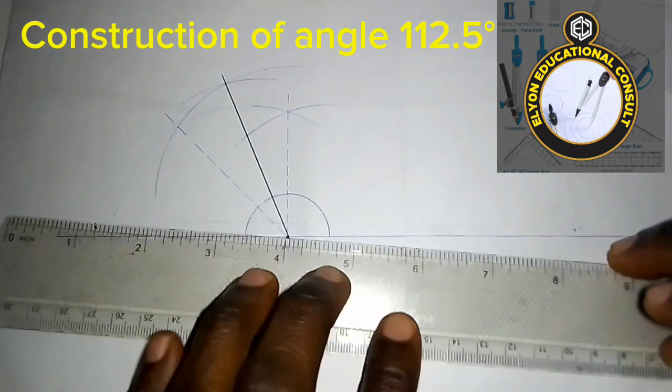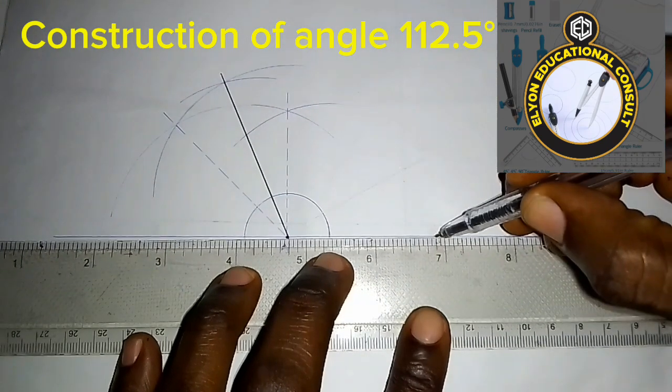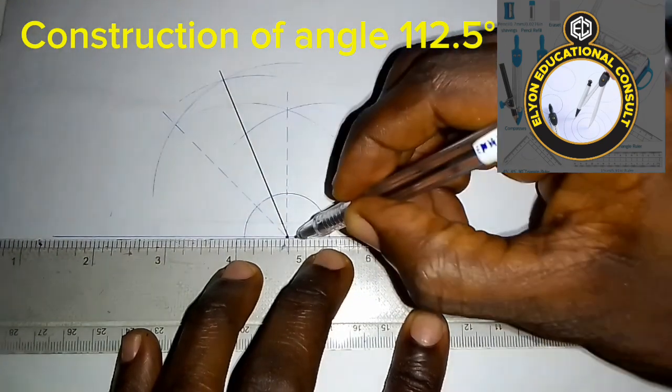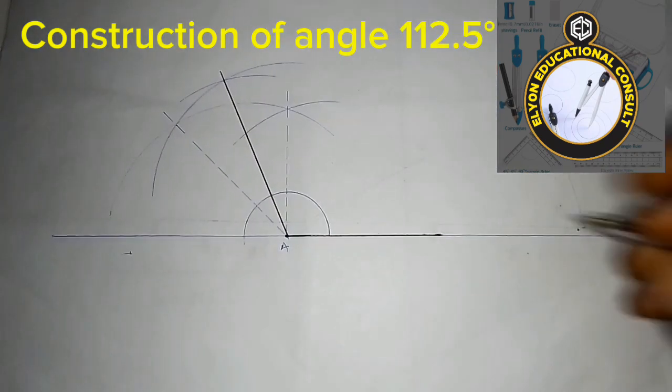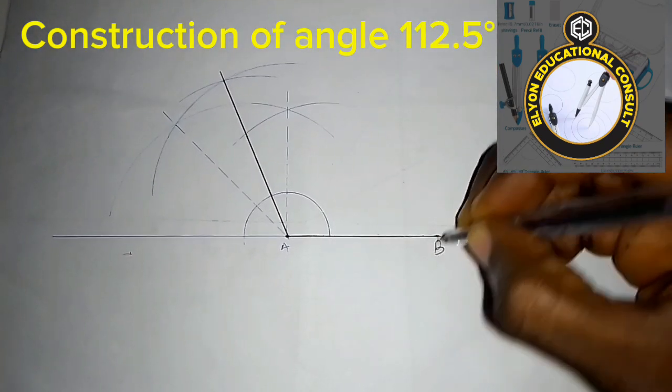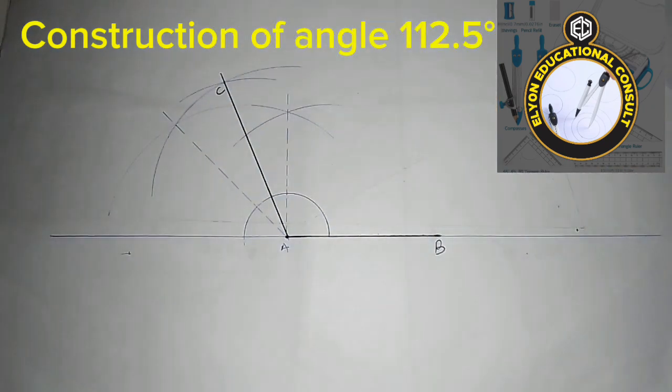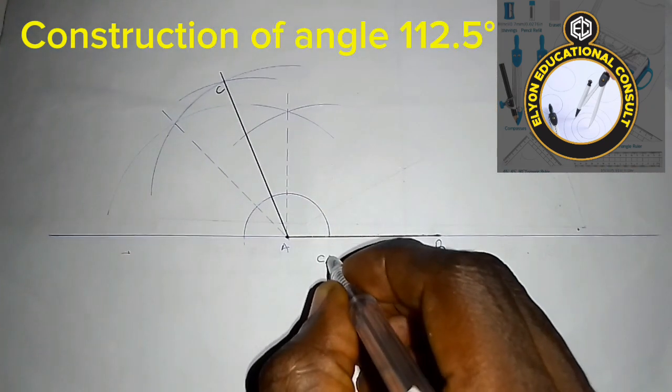So you have it this way. If this is B and this is C, then angle CAB